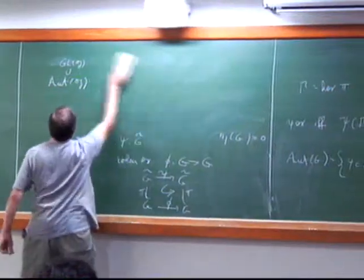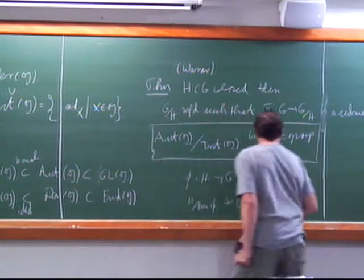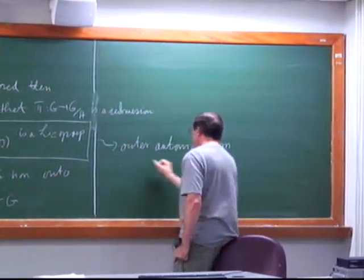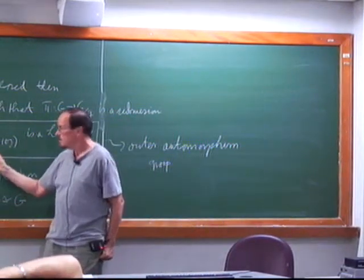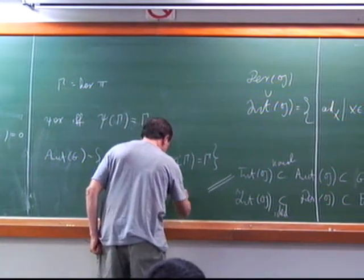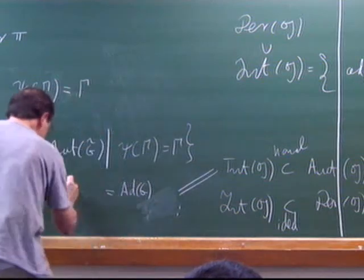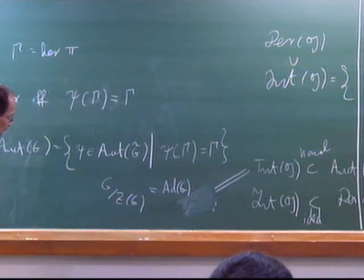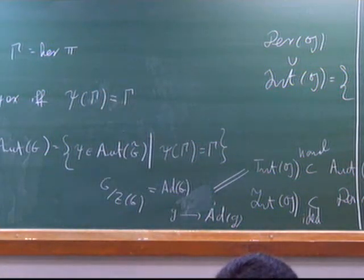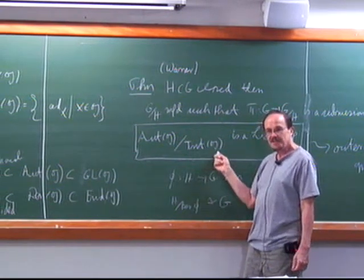So that's just reviewing there. One more comment: I have this quotient of Aut mod Int, and these are called the outer automorphisms, or the outer automorphism group — the automorphisms which aren't inner. Remember, Int(G) is described by the image of Ad(G), which is G mod the center of G, and the map is given by taking element g to Ad(g), the conjugation. So what outer automorphisms are there which aren't given by conjugation? How big is this group? That's an interesting question.